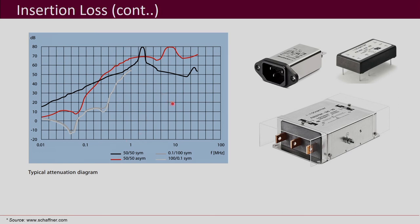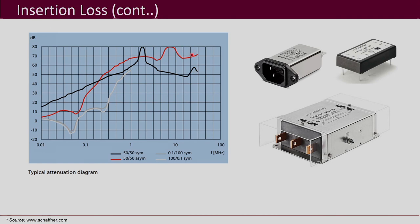Manufacturers provide attenuation diagrams — essentially insertion loss graphs — showing decibels of attenuation versus frequency. These graphs help verify whether a particular EMI filter suits the converter. Higher attenuation at a given frequency means better filtering of that frequency component. Insertion loss and attenuation are often used interchangeably in this context.